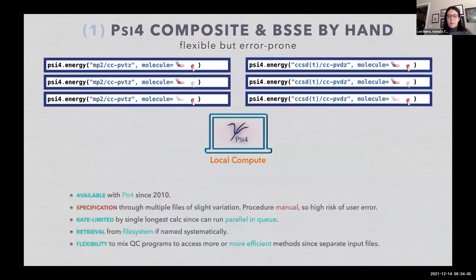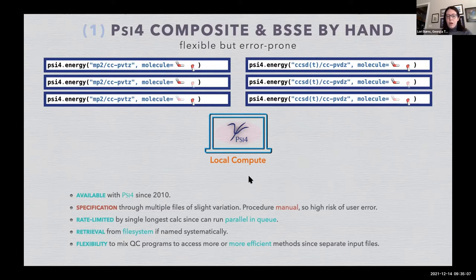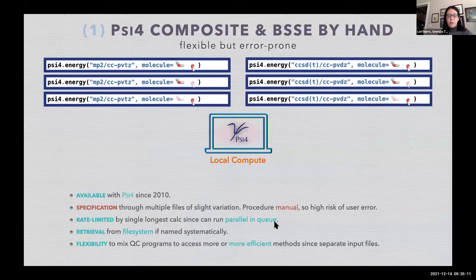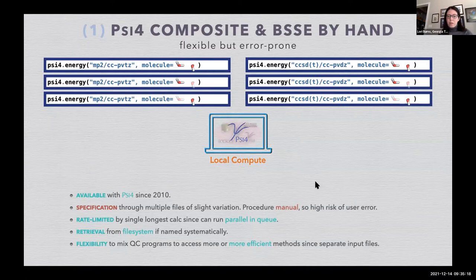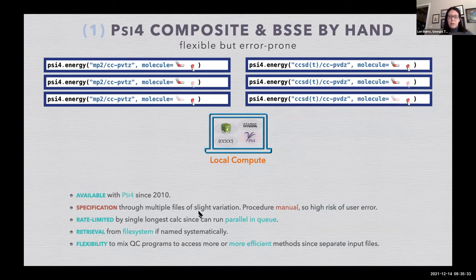If you want to do a simple one of these, you can certainly do it by hand. If you wanted to do a double triple extrapolation with MP2 and then a coupled cluster correction, you could write out the six input files for the dimer and then each of the monomers and submit them all to your local queue. You can run them in parallel because you're submitting to a queue. A year later you can find all the jobs again if you name them systematically. You can certainly mix and match these programs. However, the great downside to this is that you're composing multiple files with very slight iteration variations, so the procedure is manual and there's a high risk of user error, especially as these become dozens and dozens.